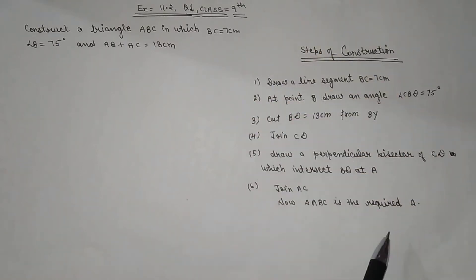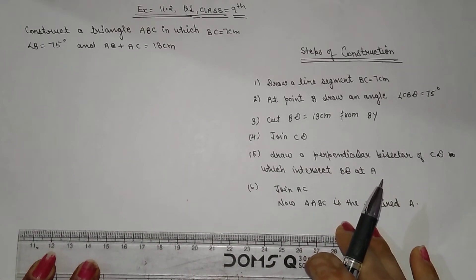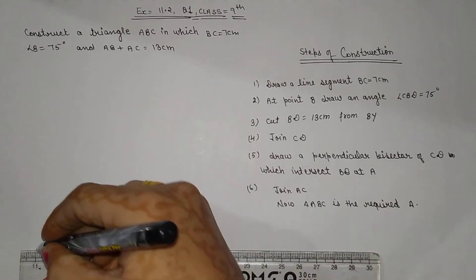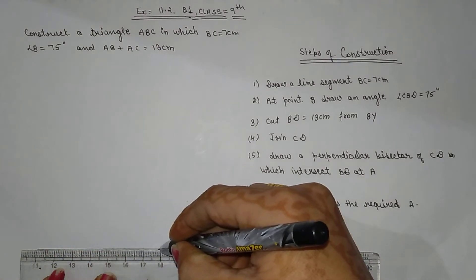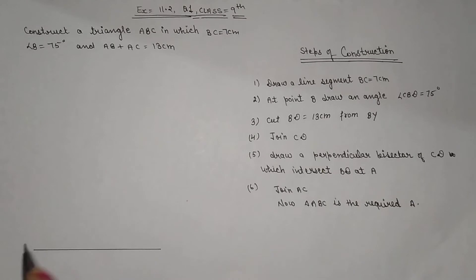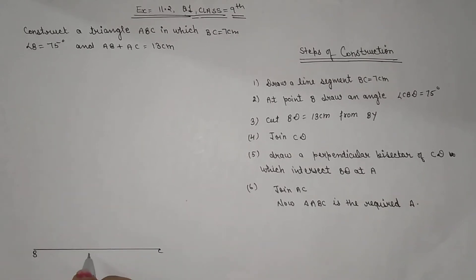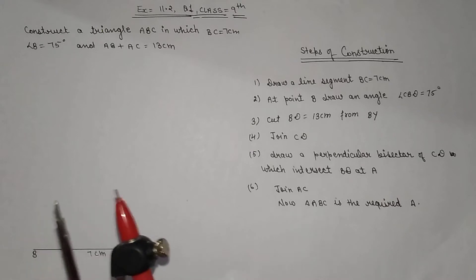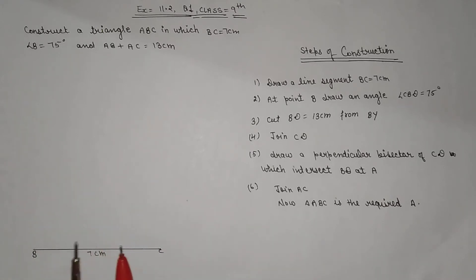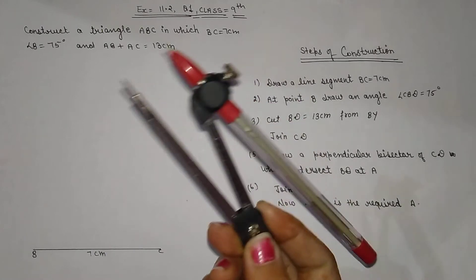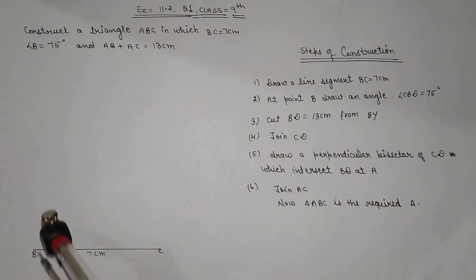The question states that BC will be 7 cm. So here we will draw BC equal to 7 cm. We have made BC 7 cm. B and C are 7 cm apart. We will now construct the triangle.